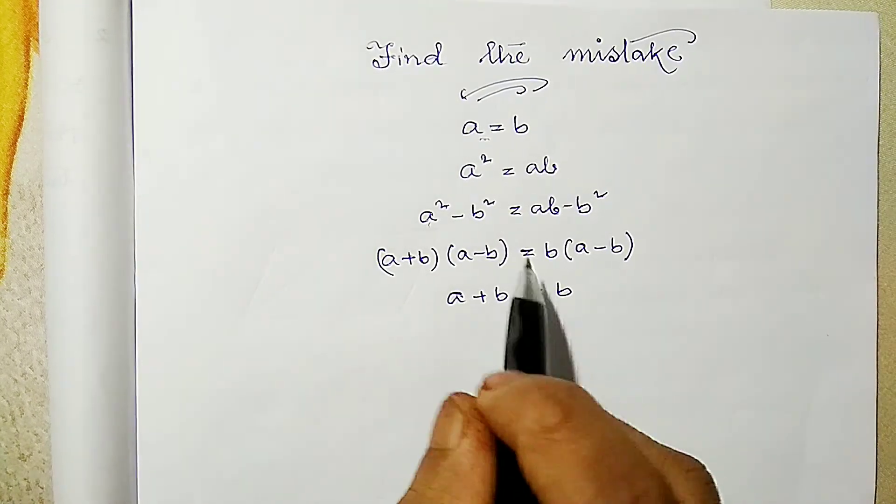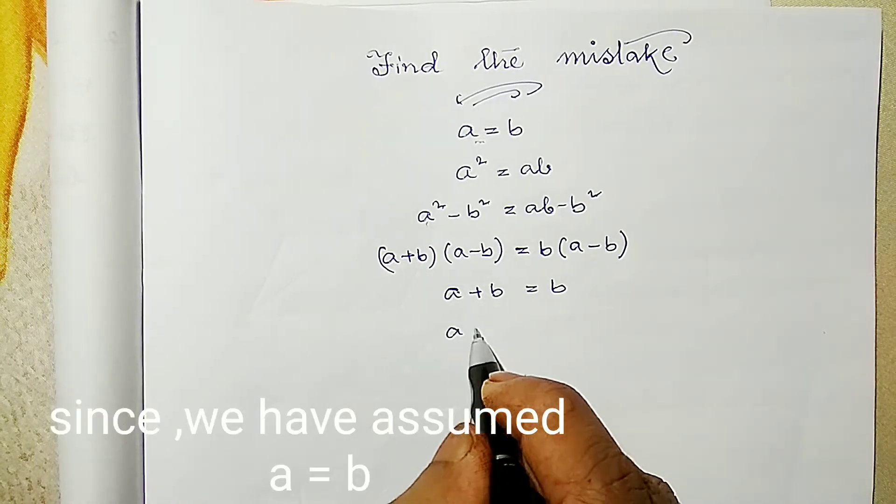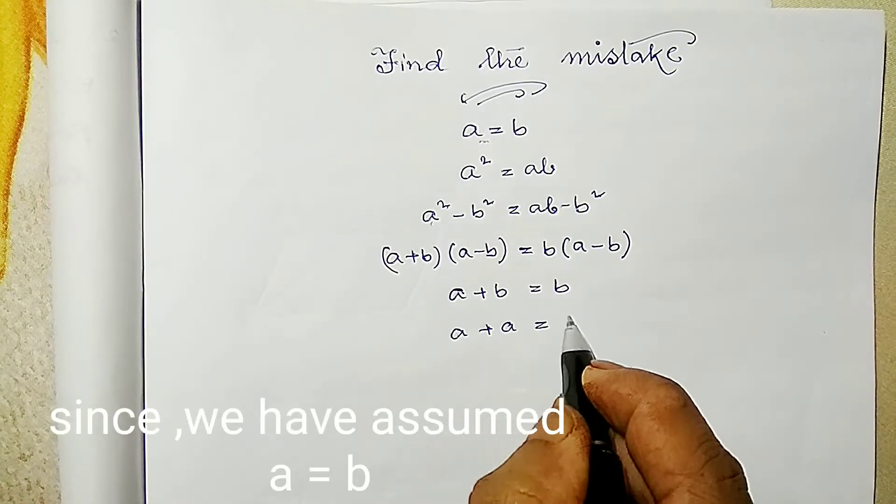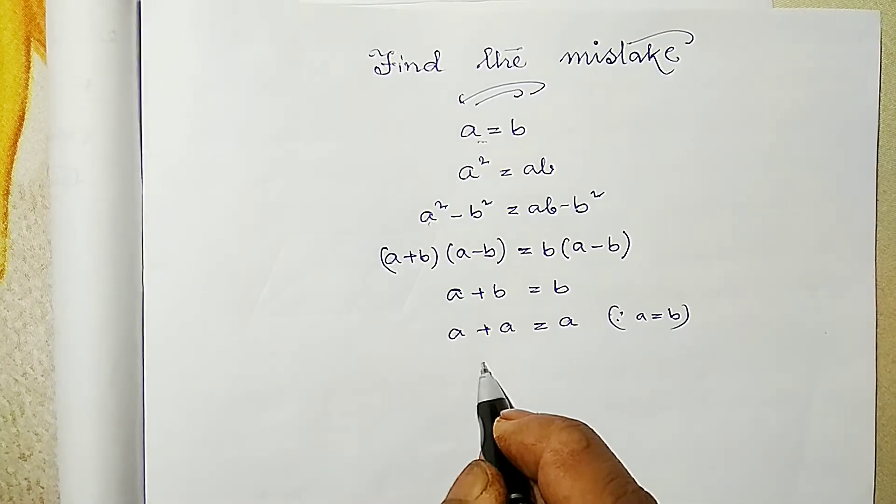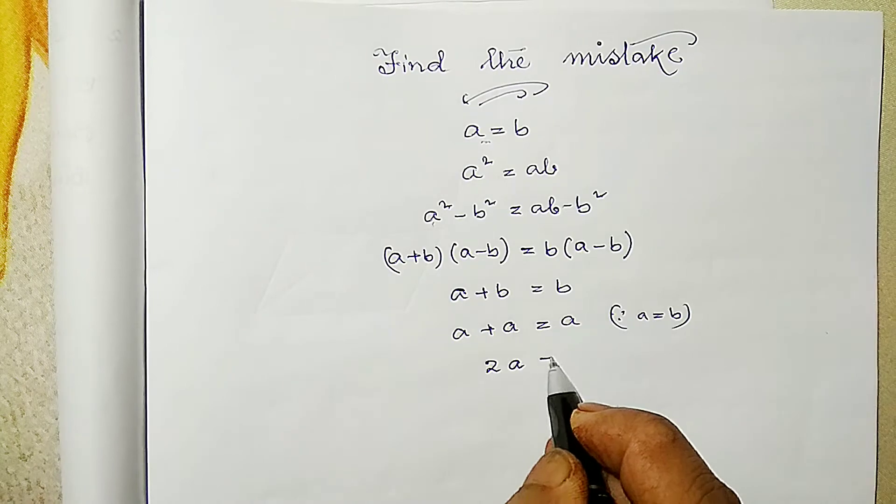Again we know a equals to b, so I can write a plus a equals to a, since a equals to b we have assumed. And a plus a means twice a. Twice a equals to a.